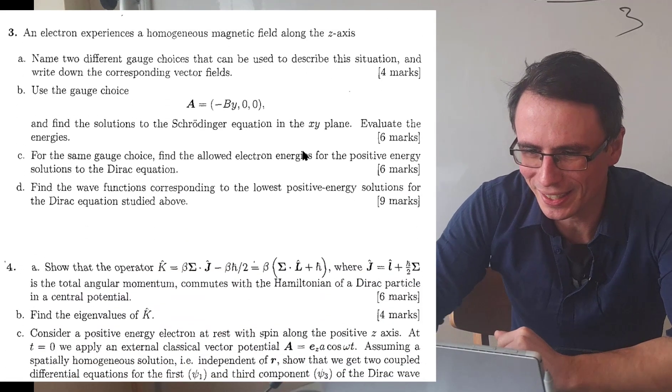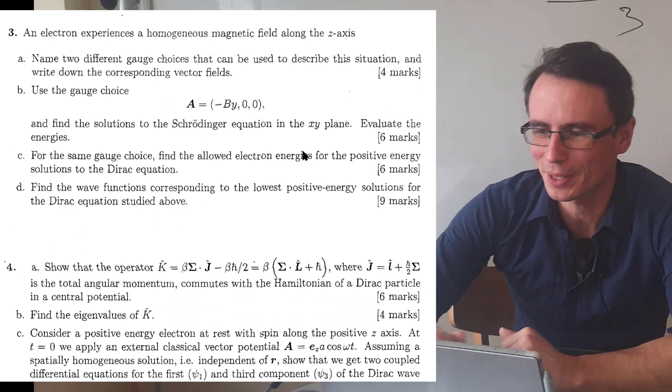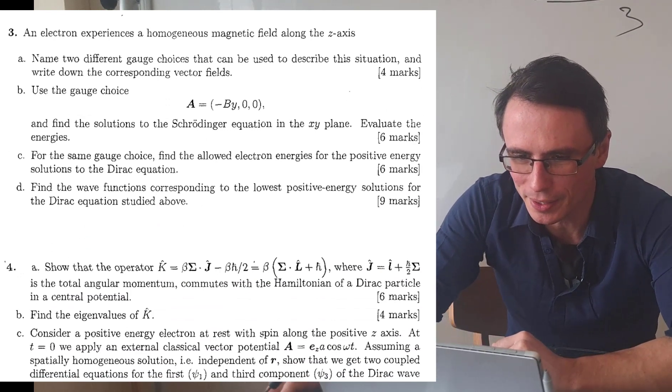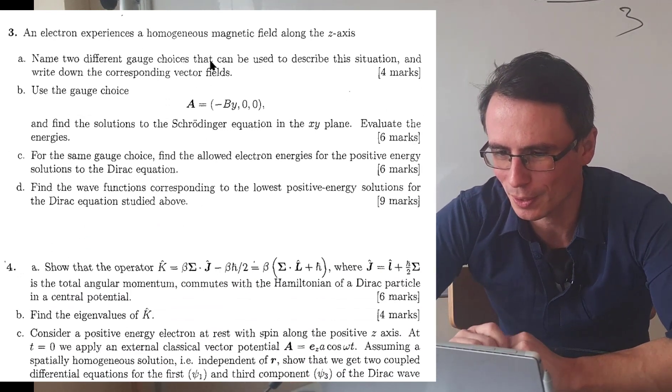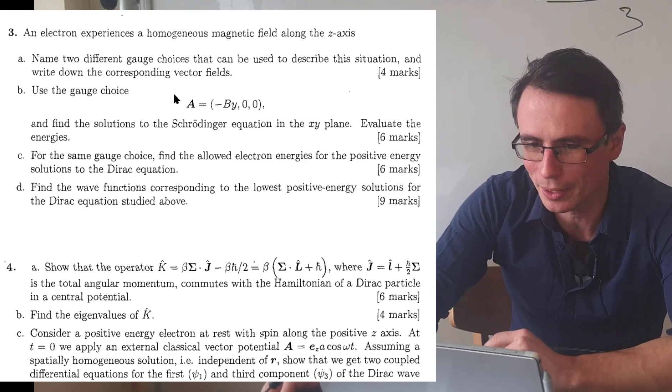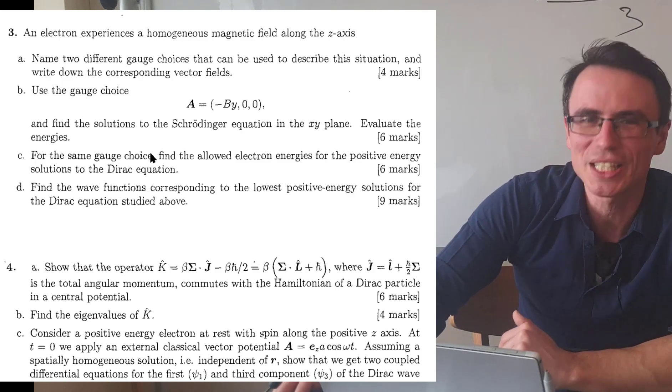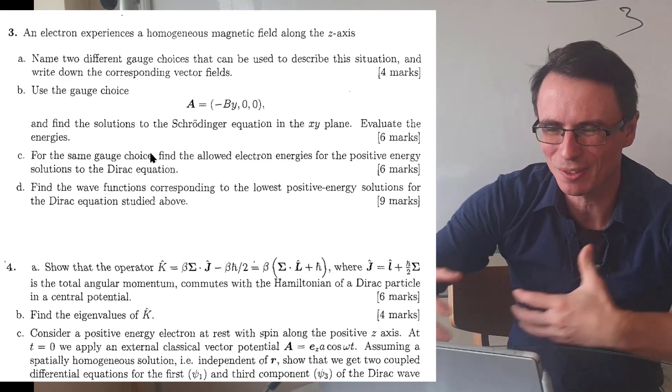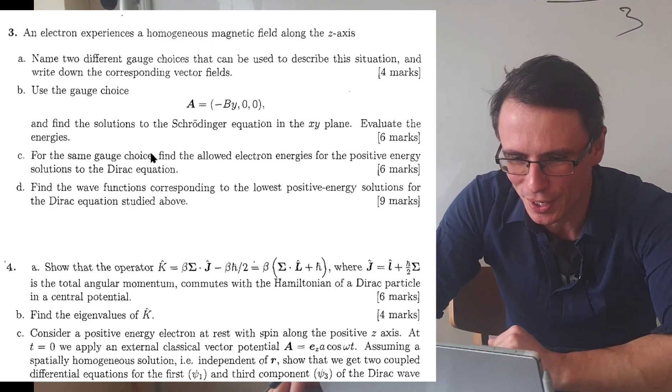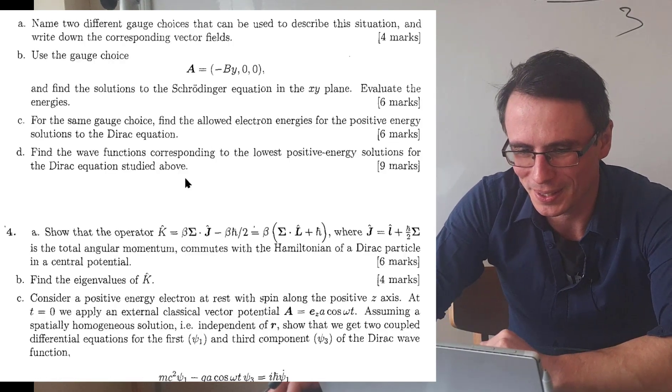Question three: An electron experiences a homogenous magnetic field along the z-axis. Name two different gauge choices that can be used to describe the situation and write down the corresponding vector fields. And then it moves on to the Dirac equation once again, which is really one of the core focuses of this exam.